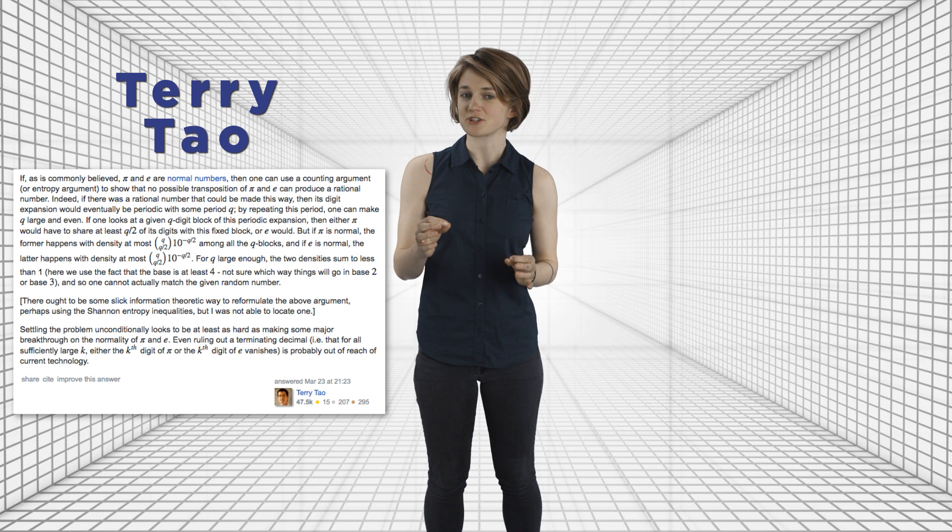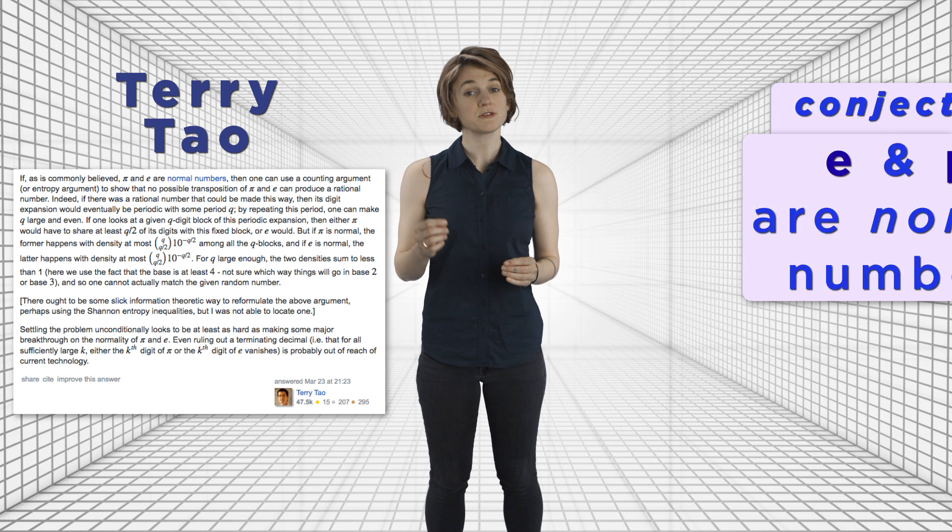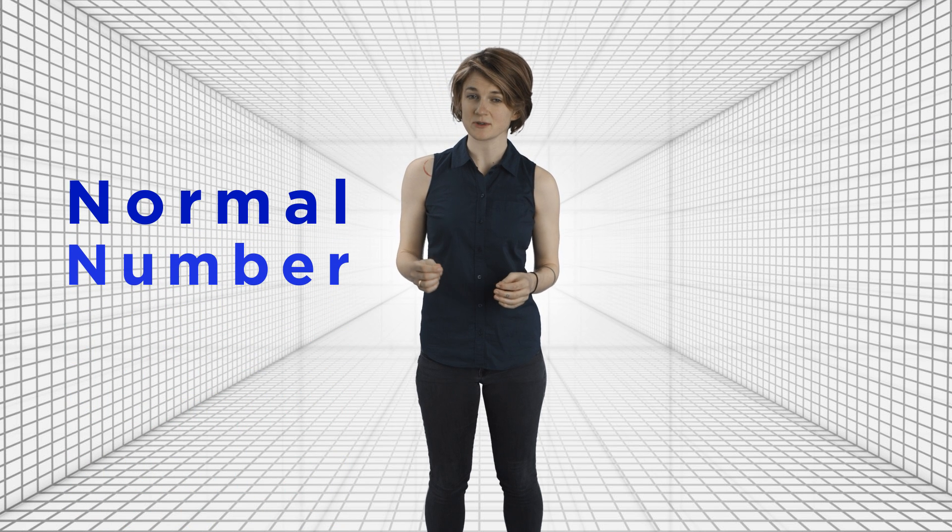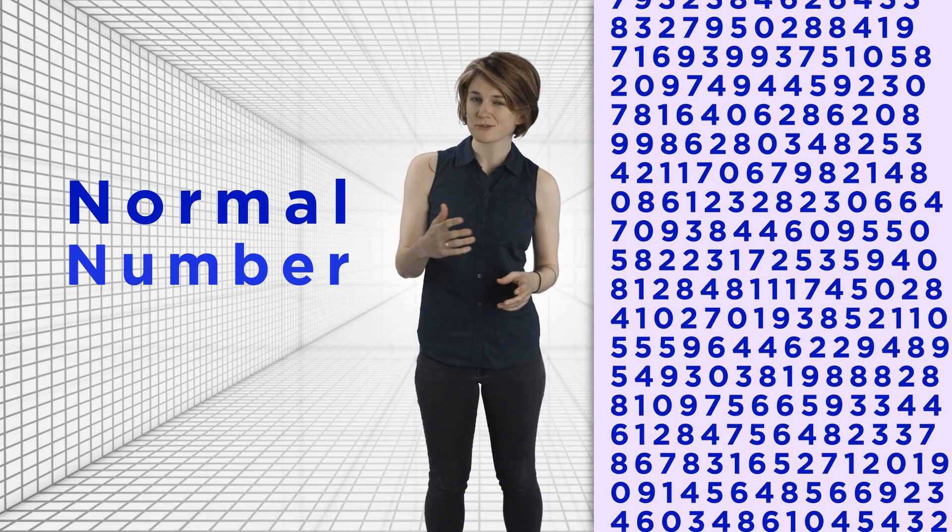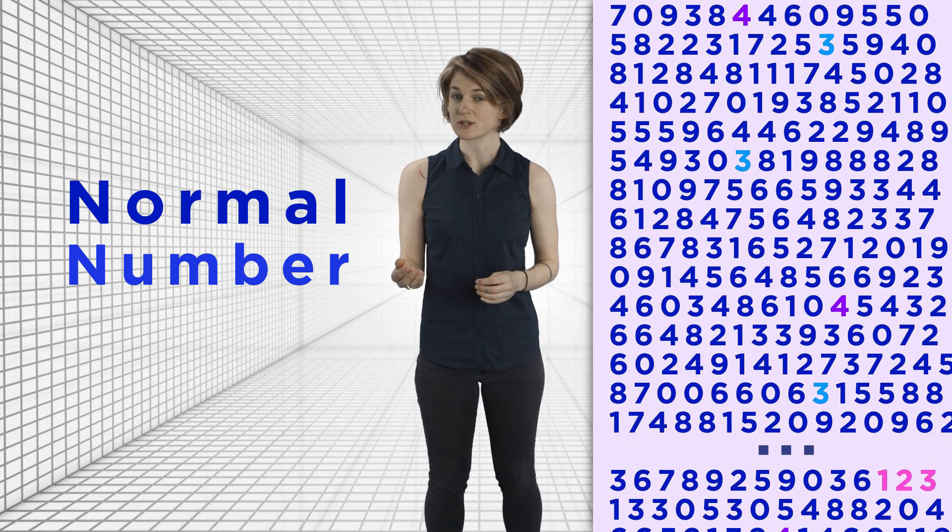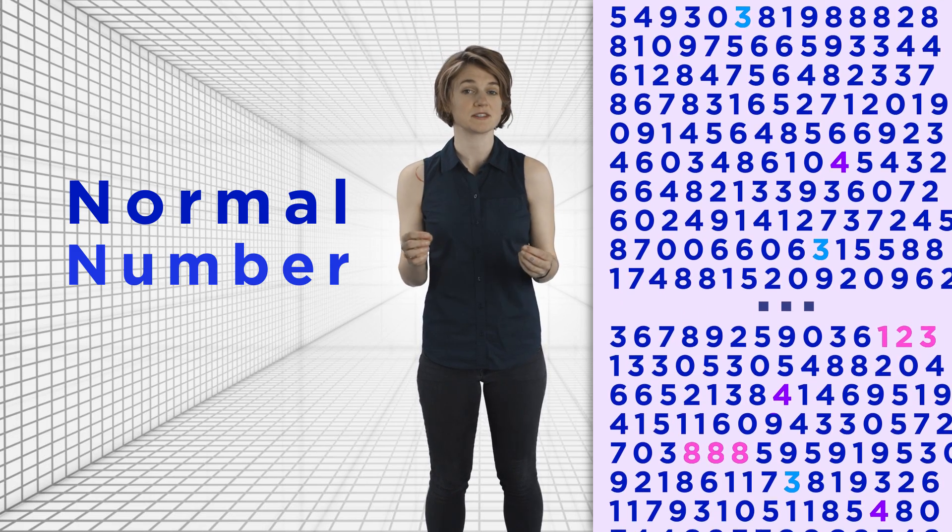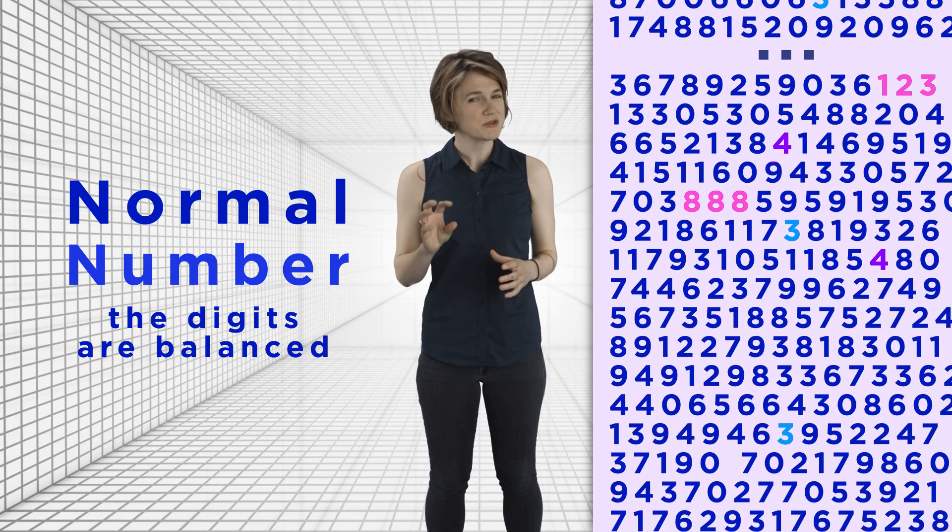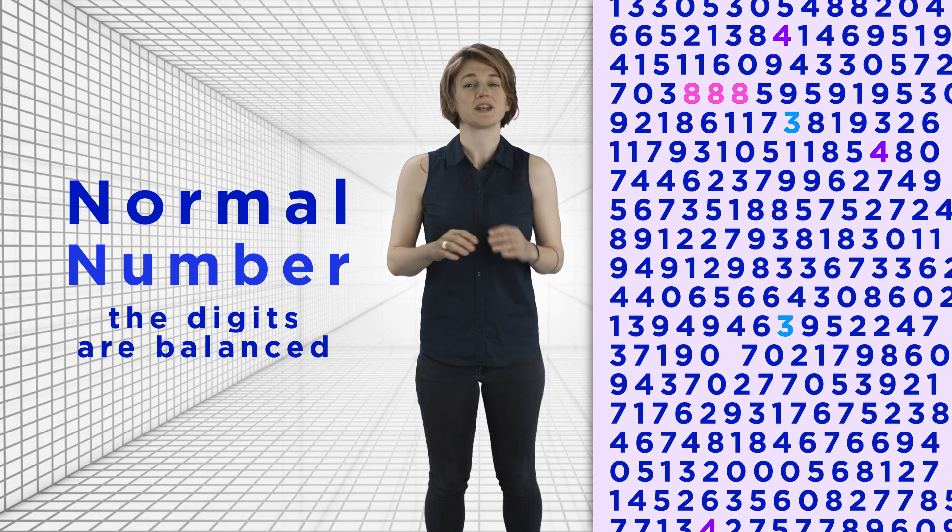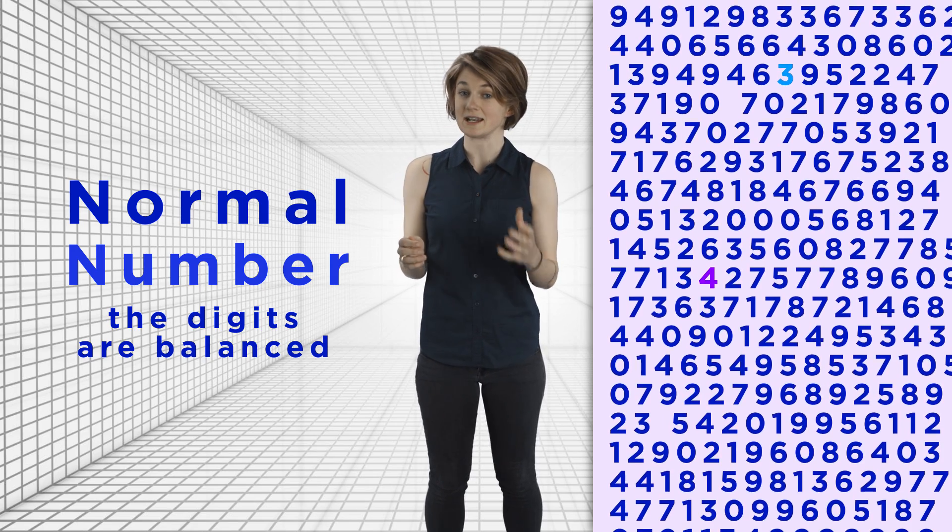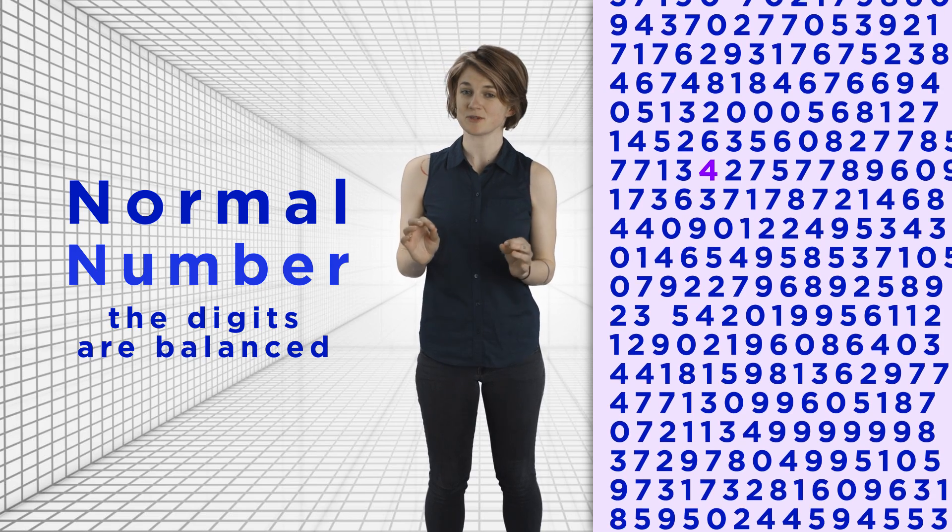Mathematician Terry Tao had an answer, sort of, for that part. There's a conjecture, which is basically an unproven educated guess, that both e and pi are normal numbers. A normal number is one where any digit or sequence of digits is equally likely to occur. So as we look through pi, the number three occurs just as often as four and the sequence 1, 2, 3 occurs just as often as the sequence 8, 8, 8. In other words, the digits of a normal number are balanced. A crazy fact about normal numbers is that we know almost every number is normal, but have very few concrete examples. In particular, no one has proved pi and e are normal numbers, even though it's believed to be the case.